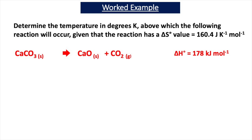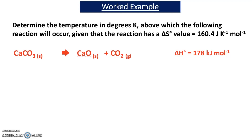To test your understanding, we're now going to go through a worked example. If you'd like to have a go at this question first, pause the video, read the question, and have a go at it. This example asks you to determine the temperature in degrees Kelvin above which the following reaction will occur, given that delta S equals 160.4 joules per Kelvin per mole and delta H equals 178 kilojoules per mole.